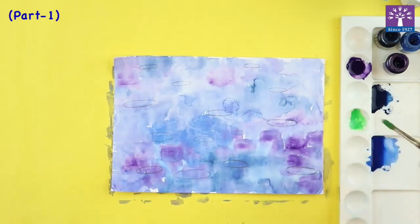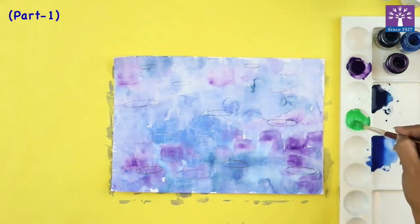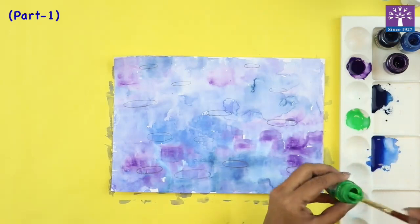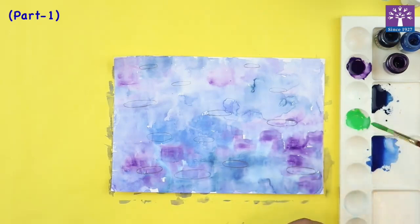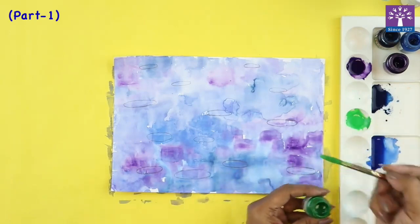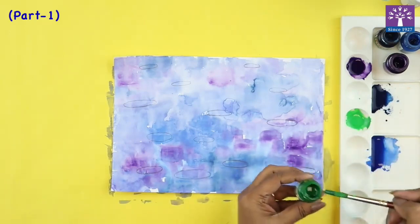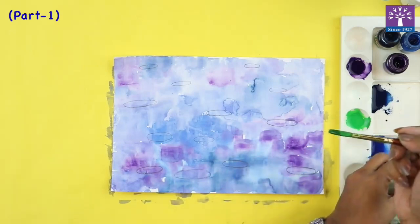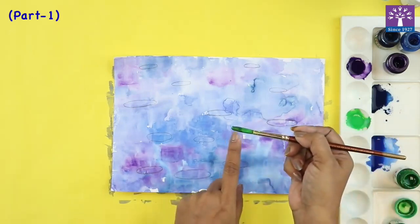Now we will take green paint, we will make this very watery. I am taking light green and dark green. I have dipped the tip of the brush in dark green color. You can see light and dark color.